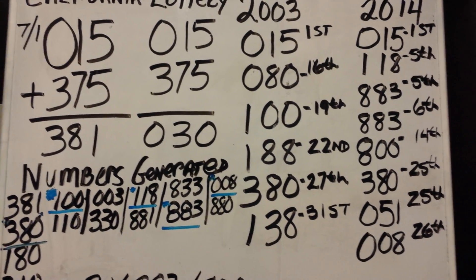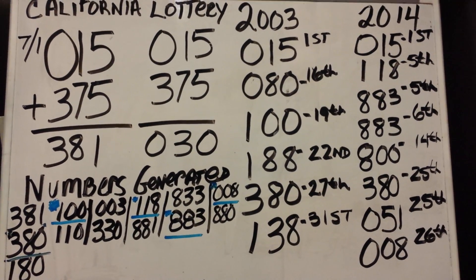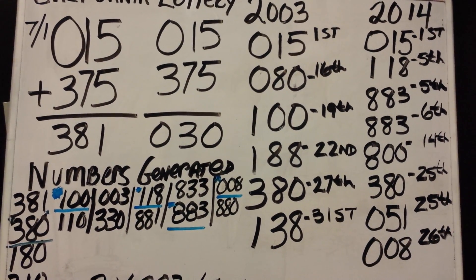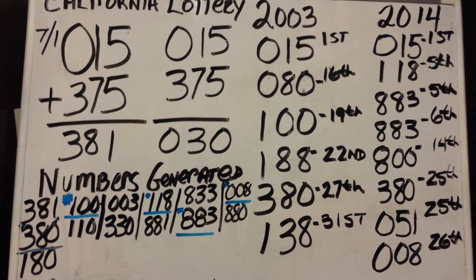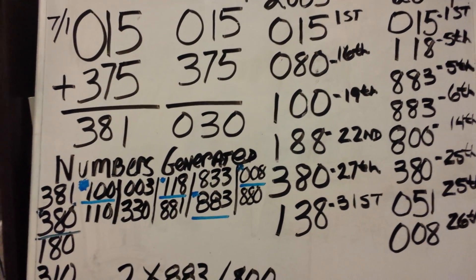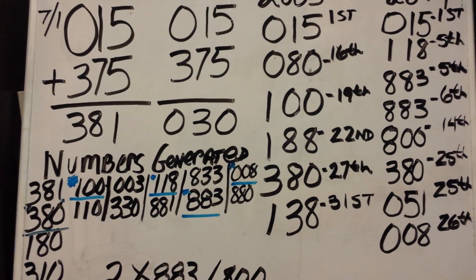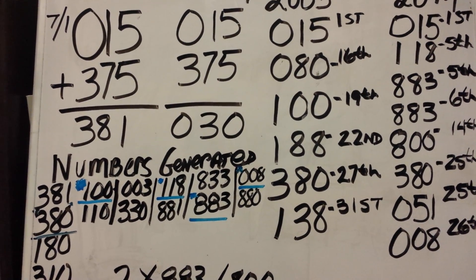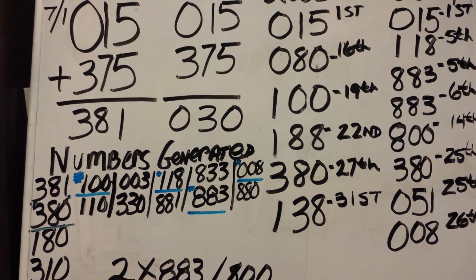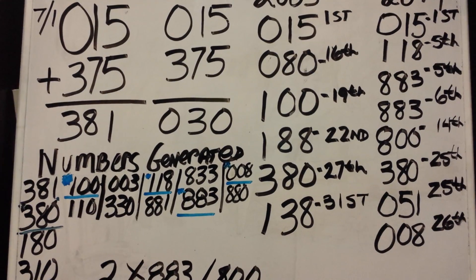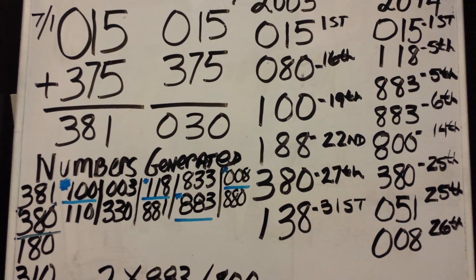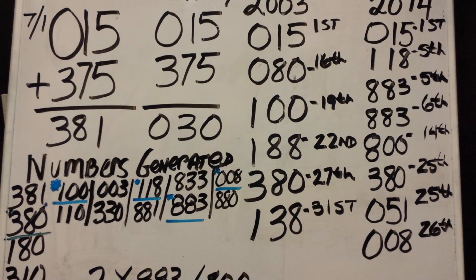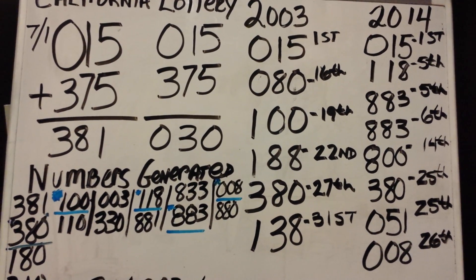In the Egyptian method, you do not carry the numbers. When you look at this chart, you'll see the number 015 hit on the first day of July 2014. Beneath it are the numbers generated by doing Egyptian math — adding and subtracting — so you get 381 when you add the numbers together and 030 when you subtract. Out of those generated numbers, 381, 3, and 0 are the numbers I'd look for to fall in the lottery.